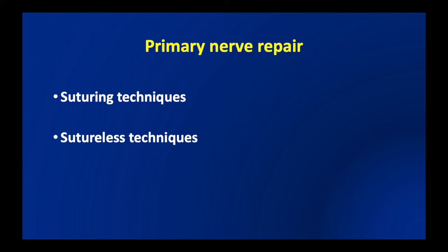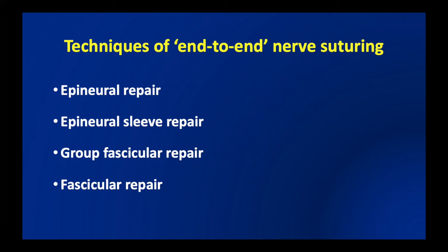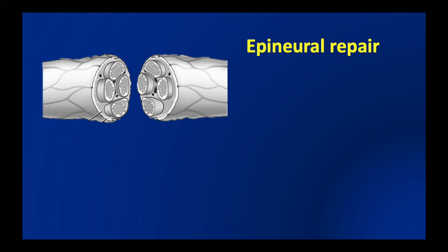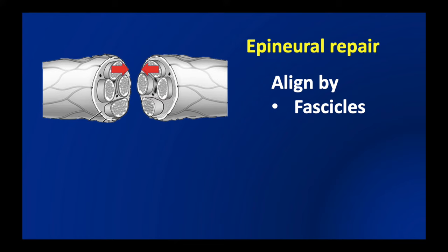We shall now see the actual techniques of primary nerve repair, which can be done using suturing techniques or sutureless techniques. The suturing techniques consist of epineural repair, epineural sleeve repair, group fascicular repair, and individual fascicular repair. In epineural repair, only the epineurium is sutured between the two ends of the nerve — this epineural layer is what can support a suture.